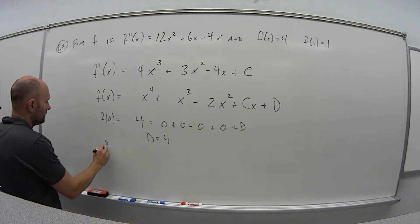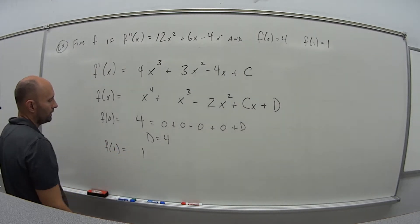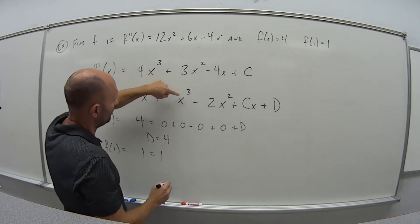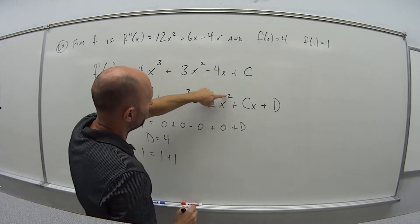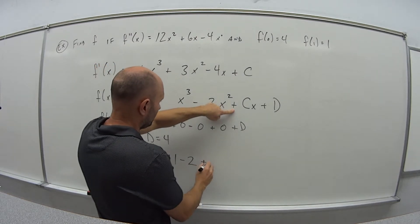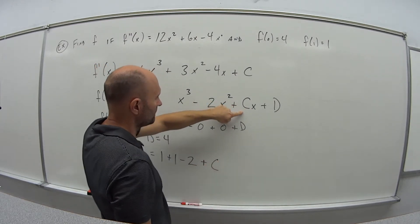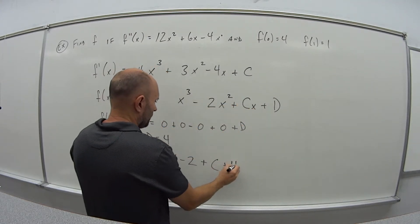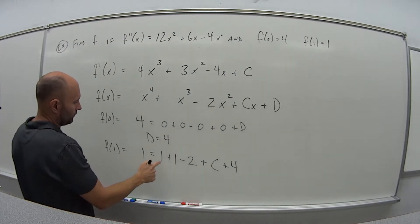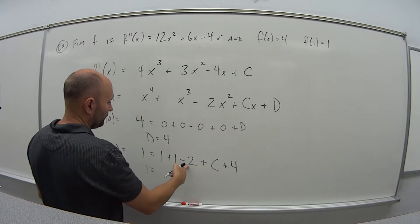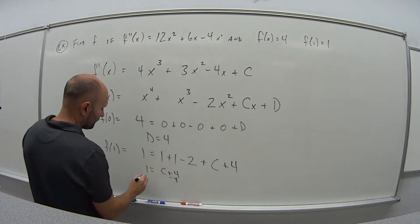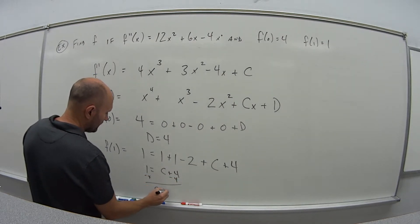Now I'm told f of 1 is equal to 1. So that's 1 to the fourth power is 1. 1 to the third power is 1. 1 squared is 1, times negative 2, so minus 2, plus c times 1, so just c, plus d, which we just figured out, was 4. So that means 1 is equal to 1 plus 1 is 2, minus 2 is 0, plus 4, so that's c plus 4. Subtract 4 from both sides, we get c is negative 3.